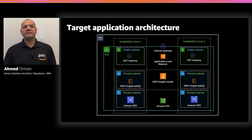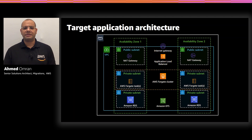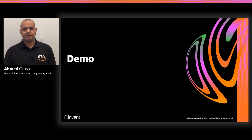This is the expected target architecture post migration. As you can see, we have two availability zones, three subnets in each availability zone: one private subnet for the database and Amazon EFS, another private subnet for AWS Fargate, and finally a public subnet for the load balancer.